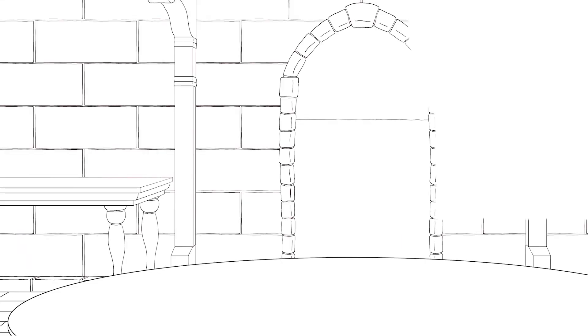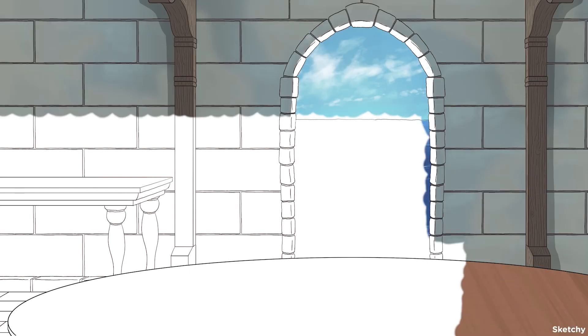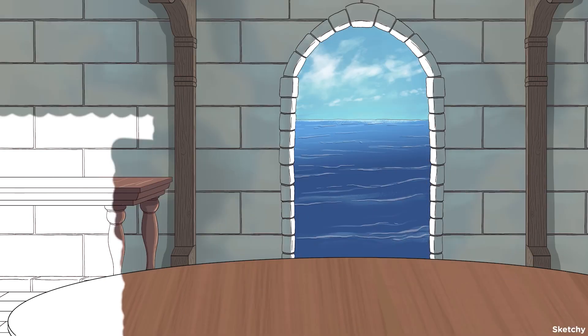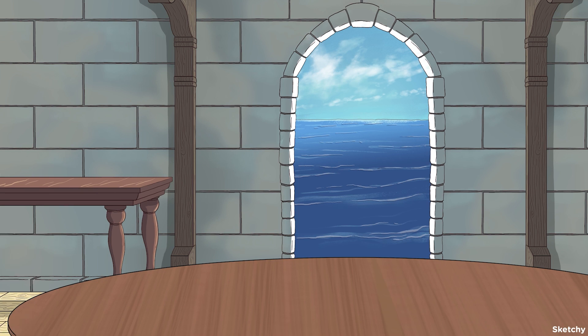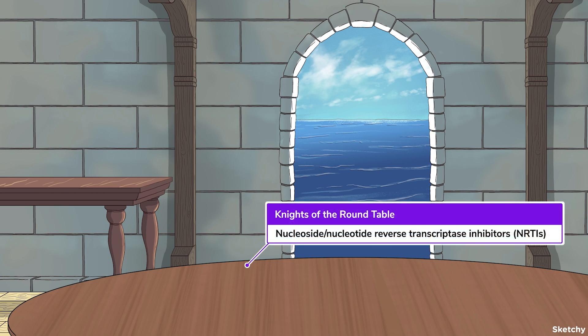In this chapter, we'll cover the drugs used to combat HIV, known as the antiretroviral agents, and use them to defend Camelot from the evil HIV white wizard. You met him over in our sketchy micro course. This first sketch is going to cover nucleoside and nucleotide reverse transcriptase inhibitors, or NRTIs. And in this scene, NRTIs stands for none other than the legendary Knights of the Round Table.